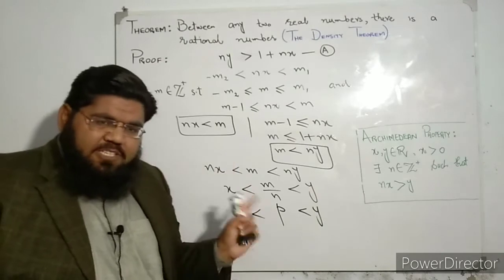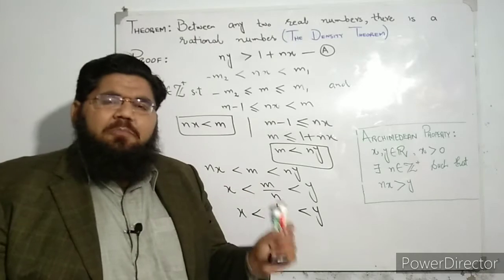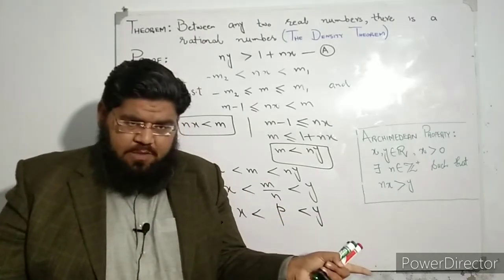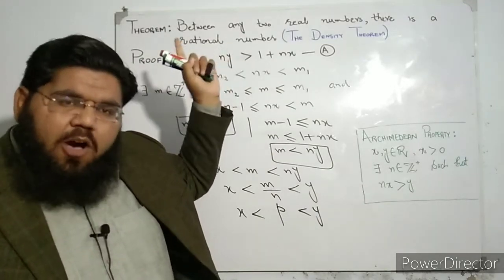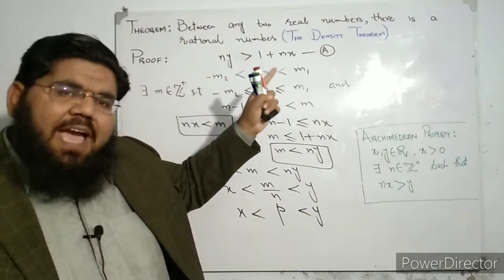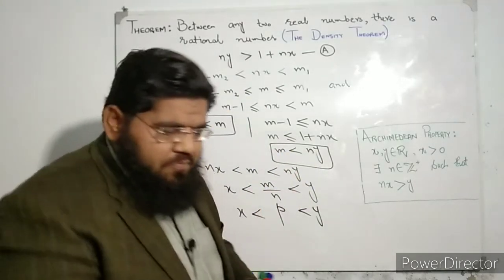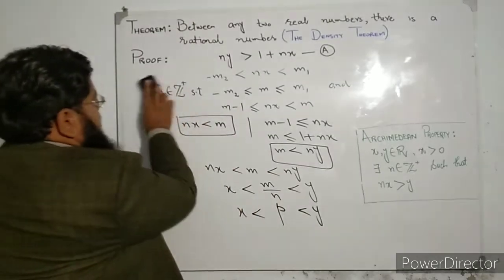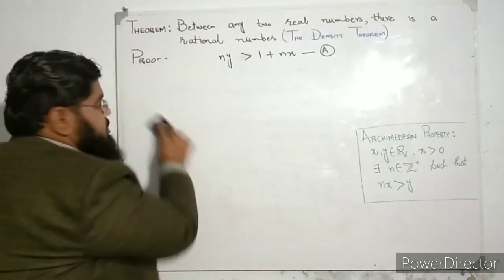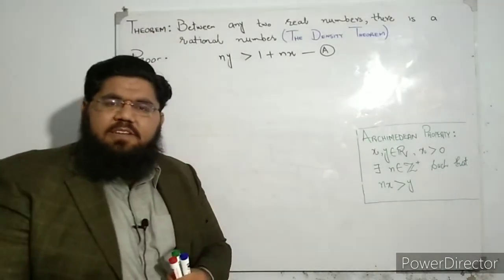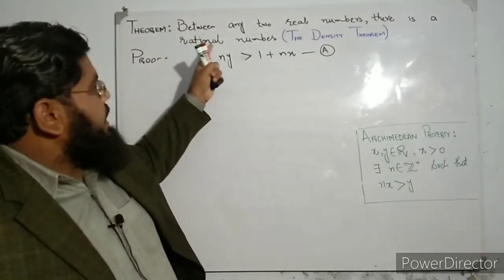There are other applications of this theorem as well. For example, if someone asks you to prove that between any two reals there is an irrational number — we have just proved there is a rational — how would you do that? Let me show you. We need to prove that between any two reals there is an irrational number, and we start with the inequality we just established.